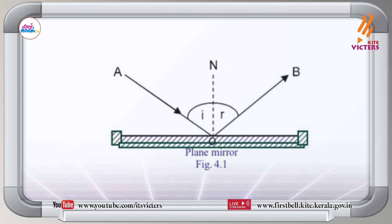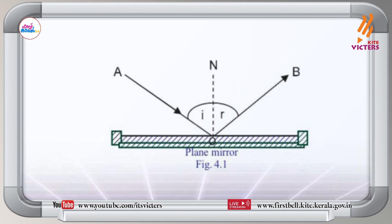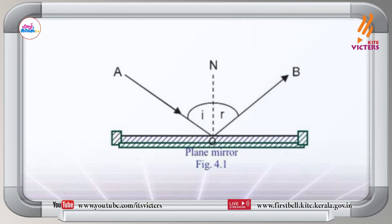We also know the laws of reflection of light. Here is a figure — observe it. Which is the incident ray? OA is the incident ray. Which is the reflected ray? OB is the reflected ray. Can you say the relation between angle of incidence and angle of reflection? Angle of incidence is equal to angle of reflection. Are the incident ray, reflected ray, and normal to the mirror at the point of incidence in different planes? No, they are in the same plane.